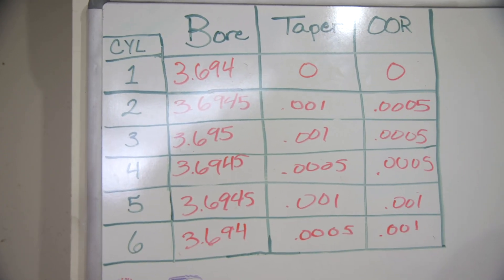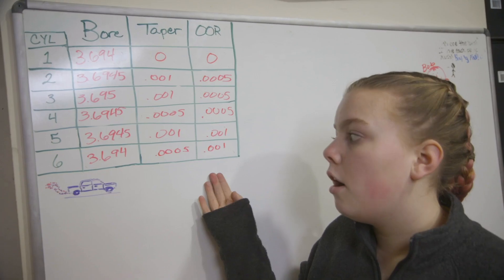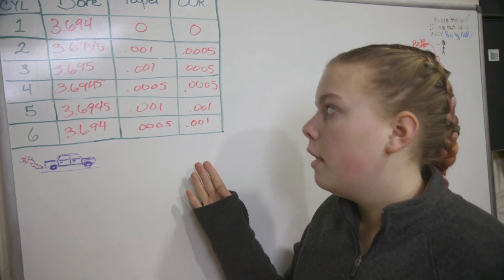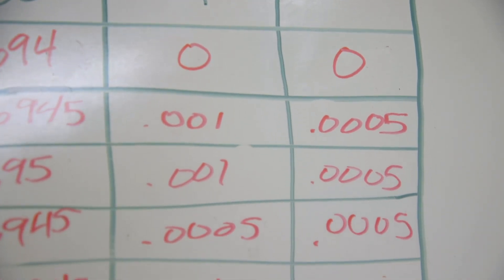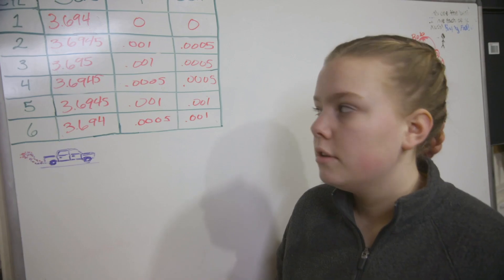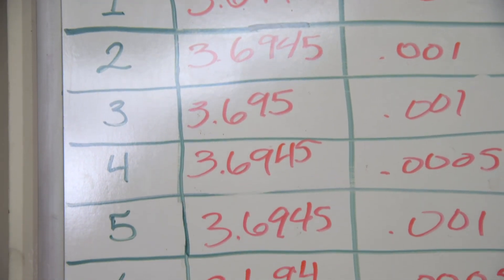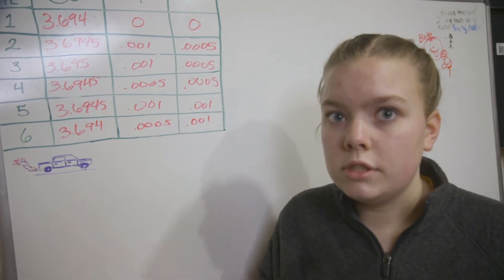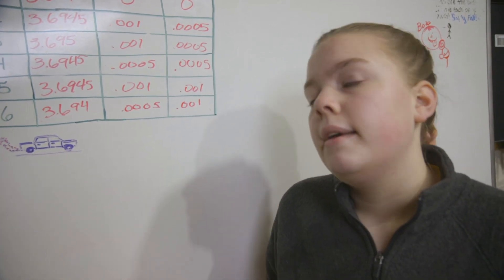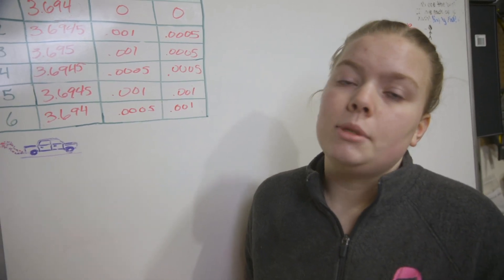So the taper and out of round are within spec, because they're all within a thousand to half a thousandths. So they're good, but unfortunately the bore sizes are about 12 to 13 thousandths over. So it looks like we're going to have to take it to the machine shop.